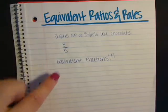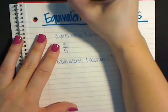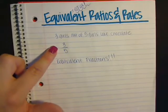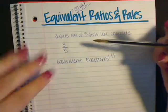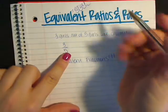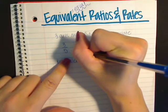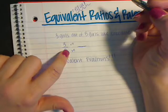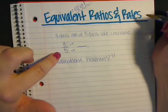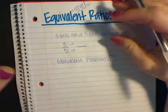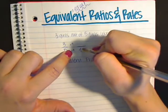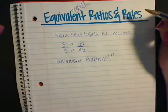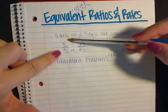Equivalent ratios and rates are just like equivalent fractions. Remember, equivalent means equal. So to find an equal fraction, I can either multiply or divide by the same number. Let's say I wanted to multiply by 9 — I'm going to multiply both the numerator and denominator by 9, because you have to multiply both to keep it equivalent. 5 times 9 is 45 and 3 times 9 is 27, so 3 out of 5 is equivalent to 27 out of 45.